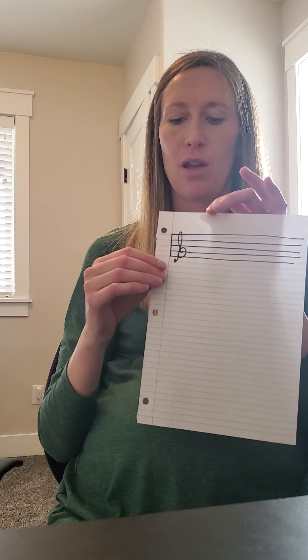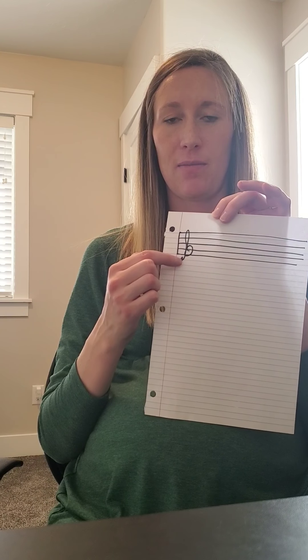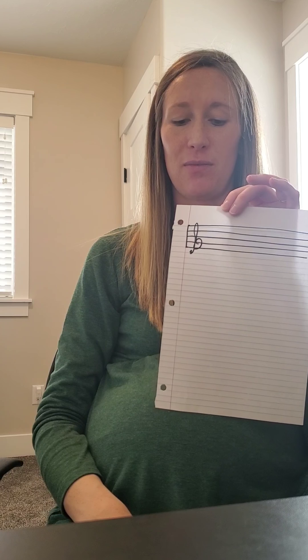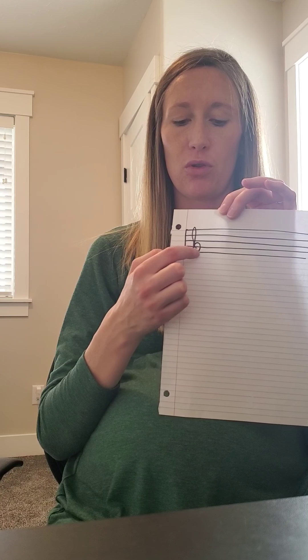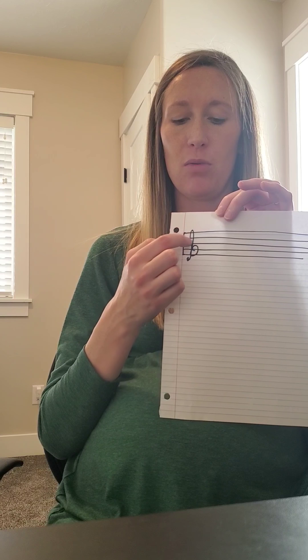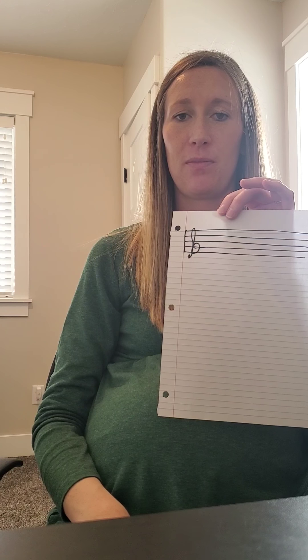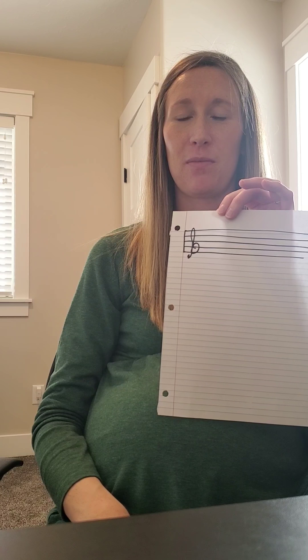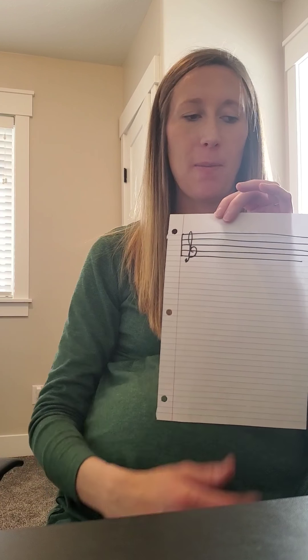With your lined paper, get your pencil out and mark out five lines, and then you're going to write a treble clef. You start in the middle and do a little swirl around, then go up to the top, make a loop, then back down and a little dot at the bottom. Maybe do that a couple times to practice. That is a treble clef.